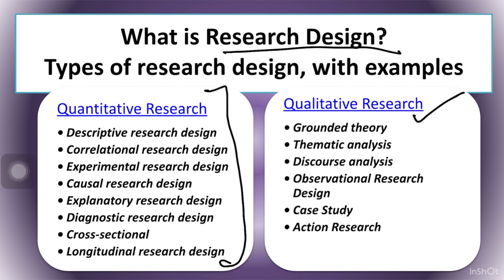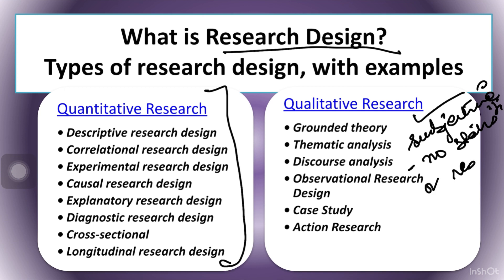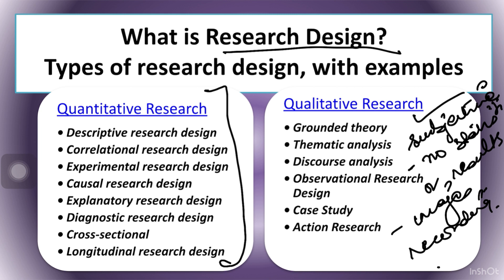Briefly explaining what qualitative research design means — this is subjective in nature. By subjective, it varies from person to person who collects and analyzes the data. No statistical tools or results are possible. You collect data in the form of images, recordings, interviews, and so on. Qualitative data is any type of data or research that cannot be measured in terms of numbers.